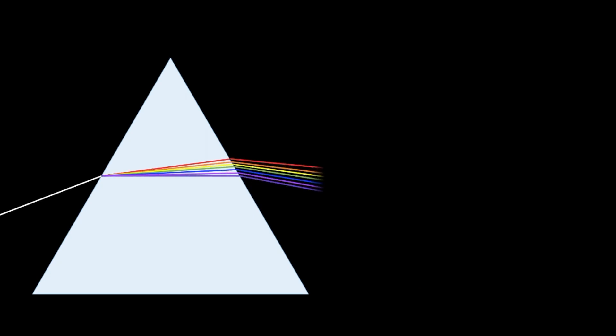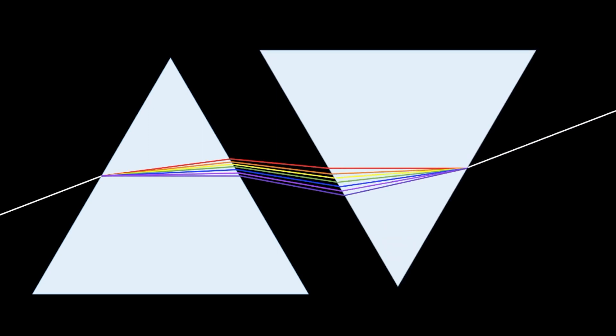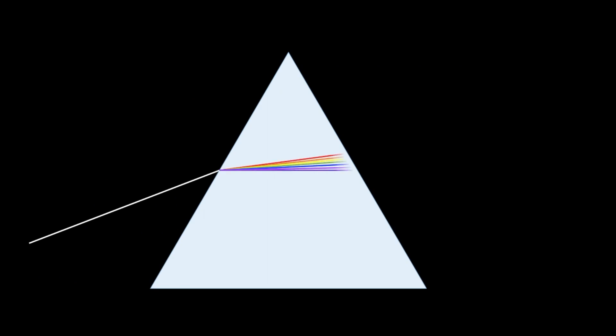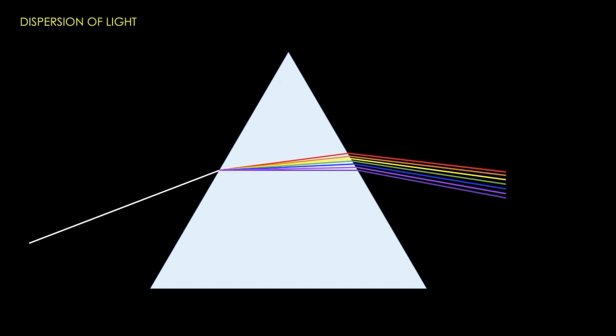If we had a ray of white light incident on the prism, we would find that this white light would produce a band of colors when passed through the prism. And if we placed another prism, this band of colors would recombine to form white light once again. So the conclusion is simple: white light is a mixture of several colors that have different wavelengths. This phenomenon is called dispersion of light — the splitting up of white light into its constituent colors.